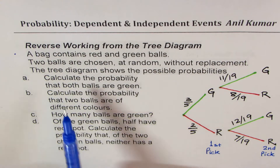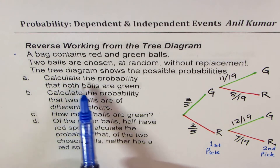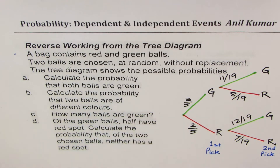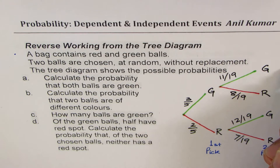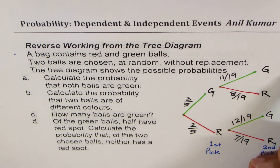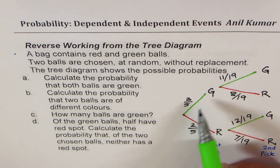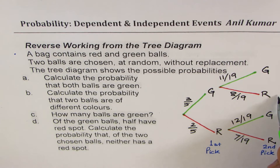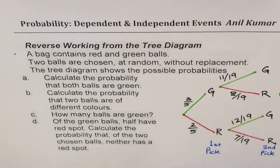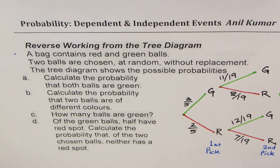Part A is straightforward — calculate the probability that both balls are green. If we take the path: first green, second green, that means both balls are green, and that is the only path. We see green and red combination for the next path, and then red and green. The last option is when you pick two balls and both could be red. For part A, we take the green-green path, and since these are dependent events, the probabilities get multiplied.